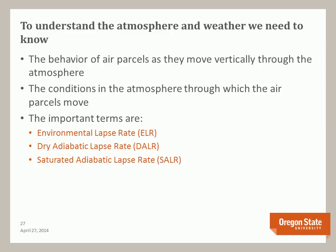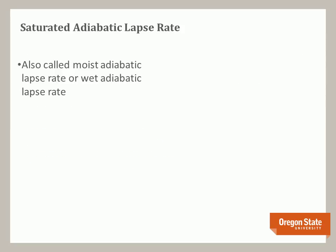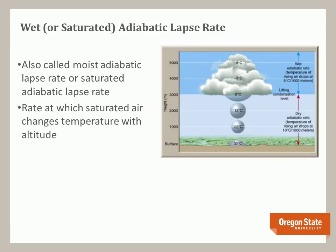The final concept is the saturated adiabatic lapse rate, also called the moist or wet adiabatic lapse rate. The saturated adiabatic lapse rate is the rate at which saturated air changes with altitude. Remember, if the air is saturated, the relative humidity is 100%, and the dew point equals the air temperature. Note in this model that as the temperature changes below the cloud at 10 degrees per thousand meters — the dry adiabatic lapse rate — above the condensation level where the air is saturated, the saturated adiabatic lapse rate is 5 degrees Celsius per thousand meters.